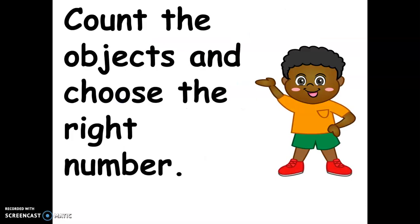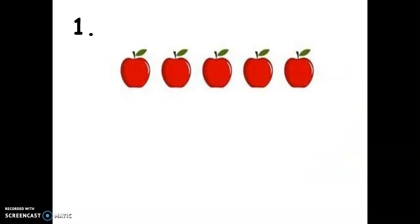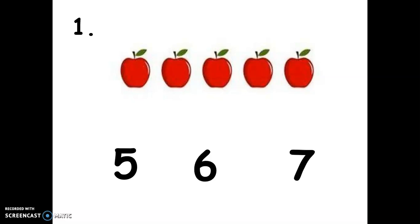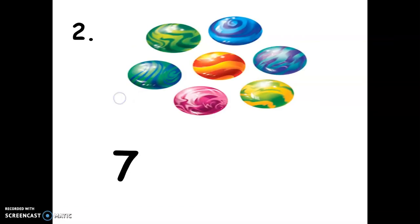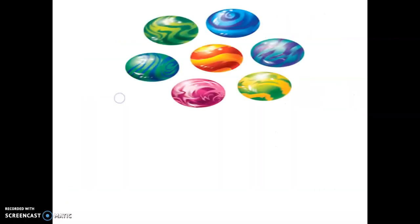Let's count the objects and choose the right number. Number one: how many apples do we have — is it five, six, or seven? Let's count. The answer is — very good — we have five apples. Number two: how many marbles do we have — is it seven, eight, or nine? Please count. The answer is — great — seven marbles.